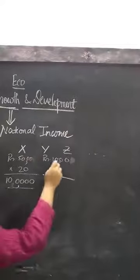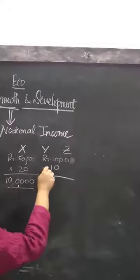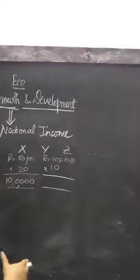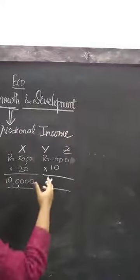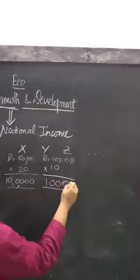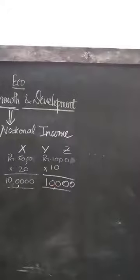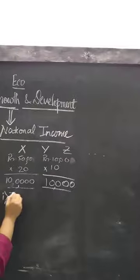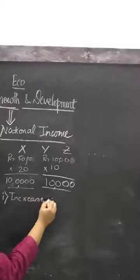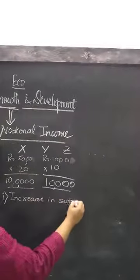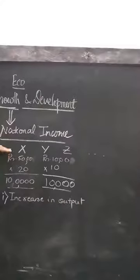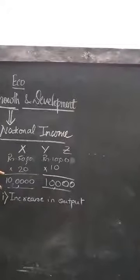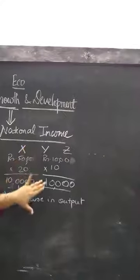Similarly, y is priced at 1,000 and 10 units are produced. So our country is optimistic that it will be able to sell the entire production. So 10,000 is the expected income from y commodity. Now, when the national income increases — there can be number 1: increase in volume of output. Just now what I said, if x is produced at price 5,000 and 20 units are produced, then the expected income from x is 1 lakh and from y that is 10,000.